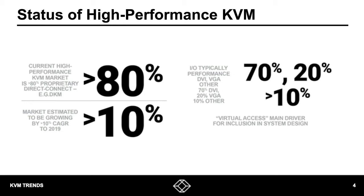Looking back three to four years, over 95% of the high-performance KVM market was proprietary direct connect. This has now declined to about 80% market share as IP-based high-performance KVM has grown in performance to match proprietary direct connect systems. We expect IP-based KVM to continue growing over the next three to four years as enterprises look to consolidate networking to IP. Just as we've seen the move from SDI to IP and telephony to Voice over IP, we will see the move from proprietary KVM to IP as well — evolutionary, taking place over many years.